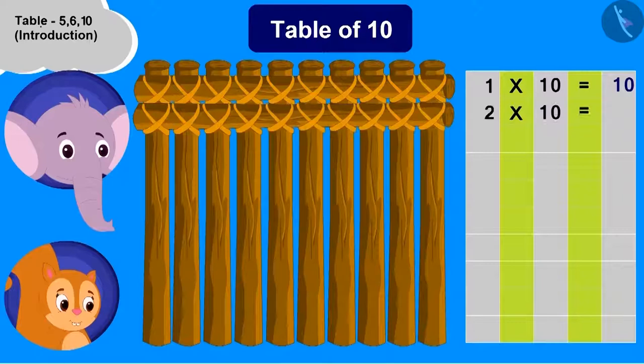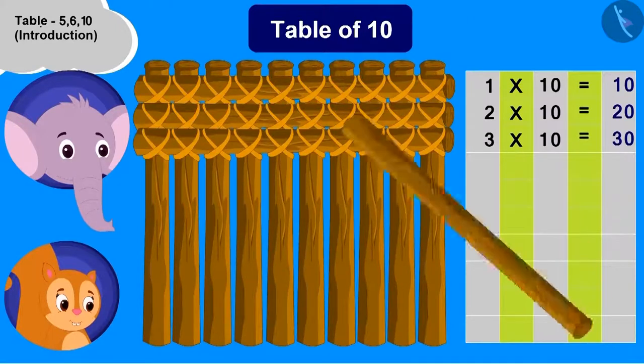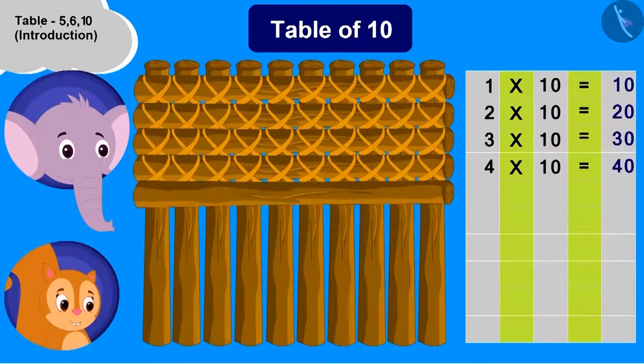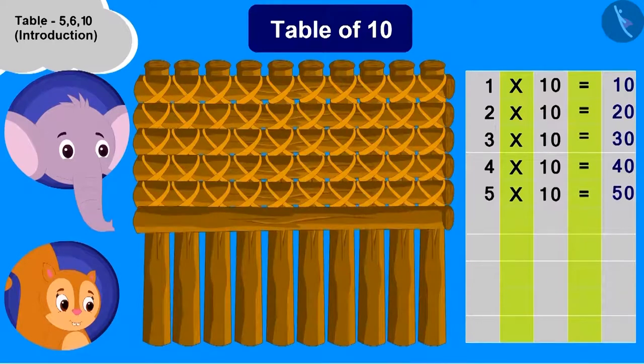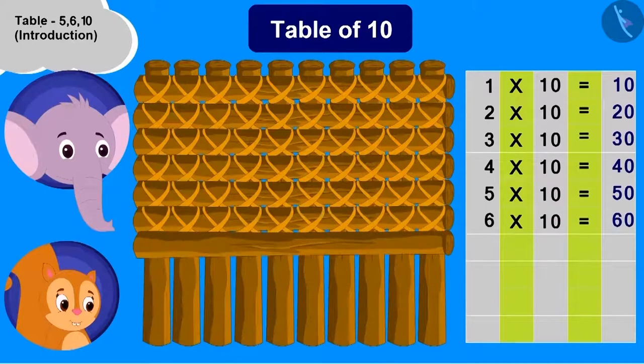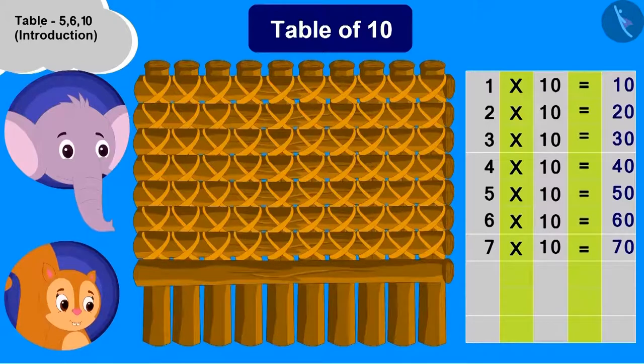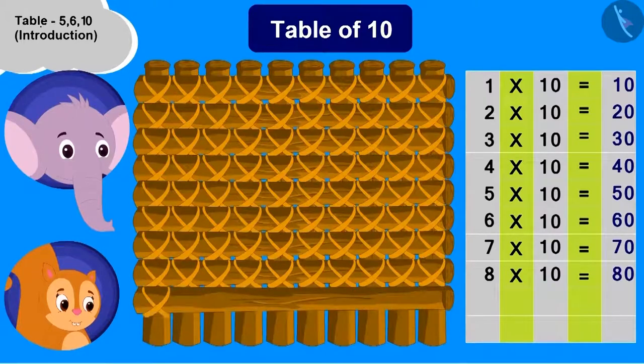Now 2 multiplied with 10 is 20. Chanda added woods just like us and build the table of 10 like this. And Appu's boat is ready.